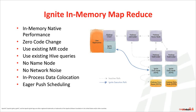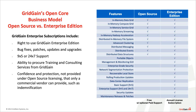GridGain provides enterprise features on top of Apache Ignite. GridGain does not change Apache Ignite in any way — it plugs into the plugin architecture provided by Apache Ignite and starts up as an Apache Ignite plugin. GridGain provides features related to data center replication, security, management and monitoring, network segmentation, rolling upgrades, and more. You can download the trial version from GridGain.com.